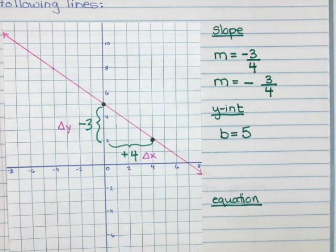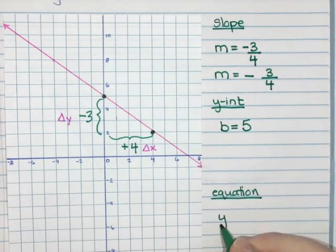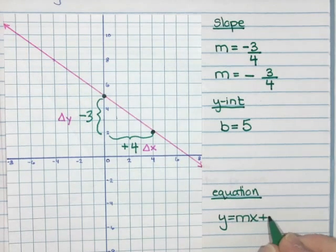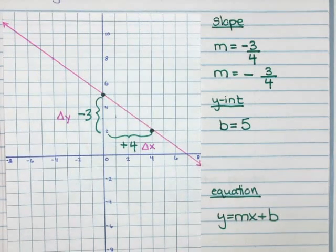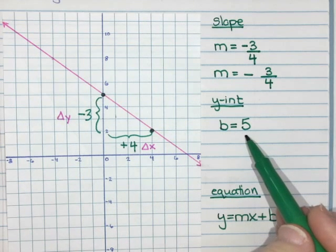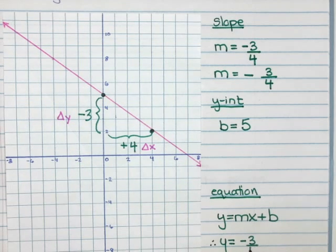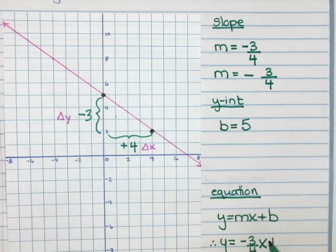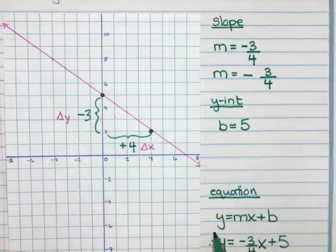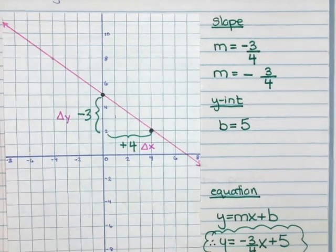So for my equation we use y equals mx plus b. So I know my slope is negative three over four and my y-intercept is five. We're going to leave x and y as x and y, so we're going to get y equals m, negative three over four x, plus b, so plus five. And that's the equation of our first line.